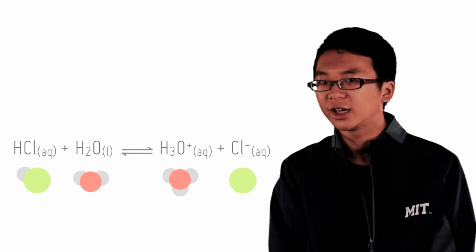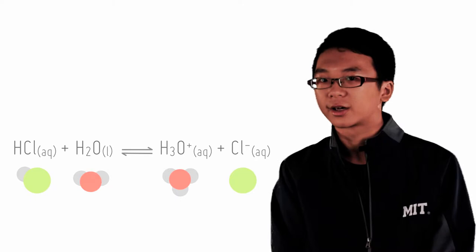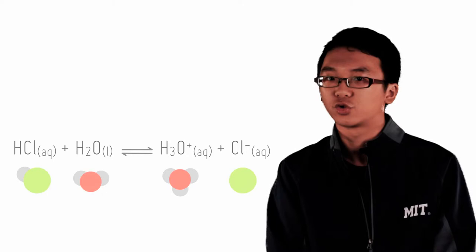Acidity is then measured by the concentration of H+, or more correctly H3O+, in the solution. The higher the concentration, the lower the pH.